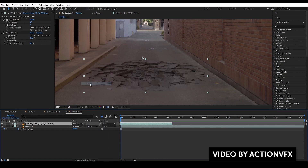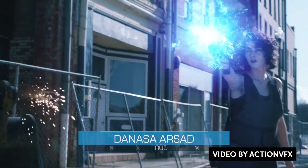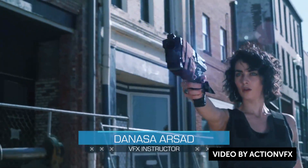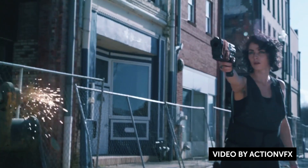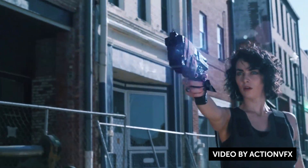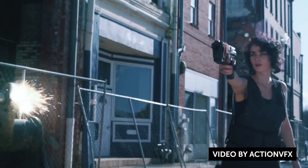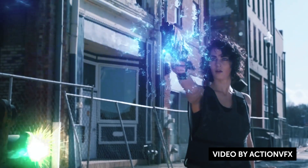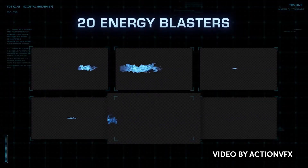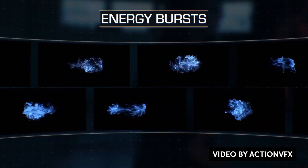They also have two new tutorials on energy blast effects — how to build a sci-fi gun blast effect using stock footage. They cover how to convert 3D null data into 2D data using expressions, expression-to-keyframe conversions, and a whole bunch of other stuff including glows and iconic lens flares using Red Giant Optical Glow and other tools.